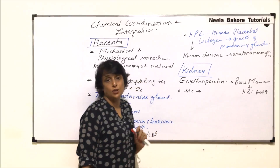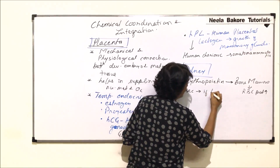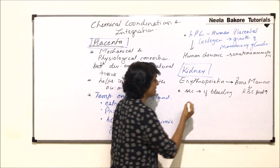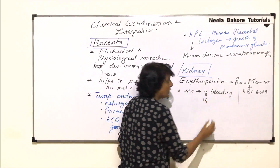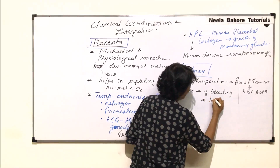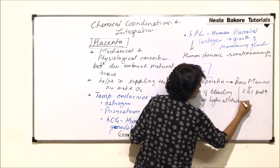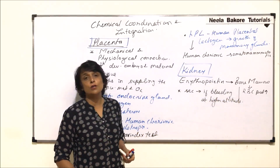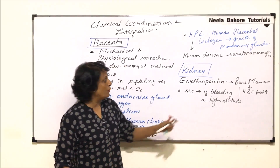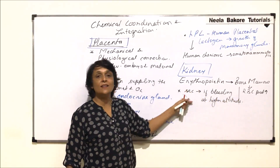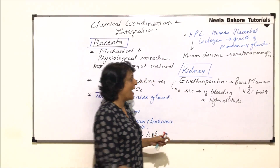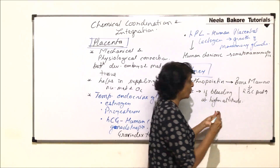Erythropoietin secretion is controlled by conditions such as bleeding, where RBCs have to be produced because blood loss has taken place. Second, if a person goes to a higher altitude — at higher altitude, oxygen is less, so more hemoglobin is required, meaning more RBC production must take place. In these conditions, secretion of erythropoietin would be triggered, and RBC production is known as erythropoiesis.